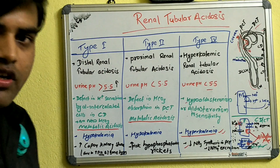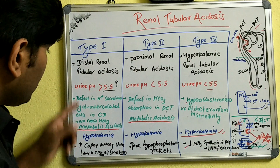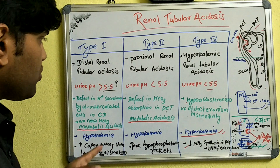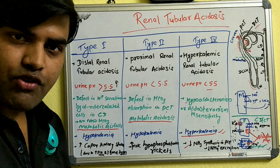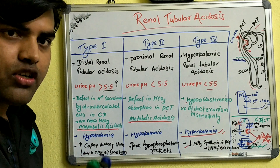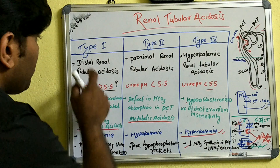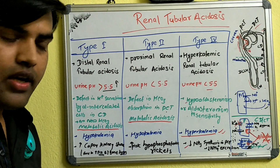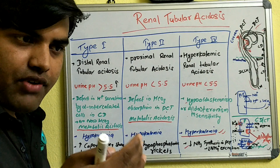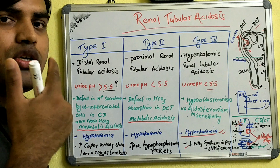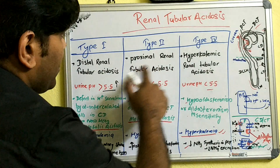The causes of Type 1 distal RTA include: amphotericin B toxicity — which causes hypokalemia — analgesic nephropathy, obstructive uropathy with congenital urinary tract obstruction, and autoimmune diseases such as Sjögren's syndrome. For Type 2 proximal RTA, the causes are Fanconi syndrome, multiple myeloma, and carbonic anhydrase inhibitors such as acetazolamide.